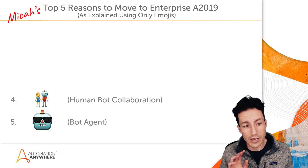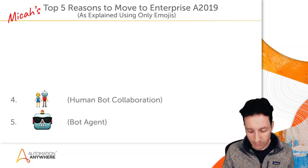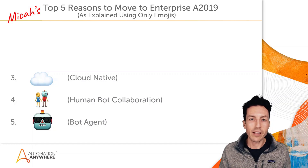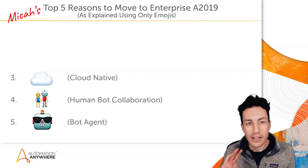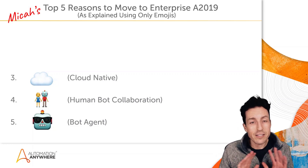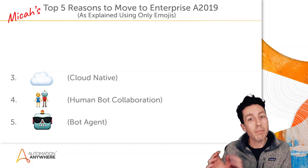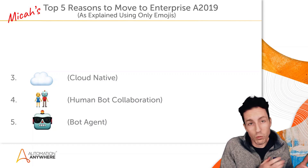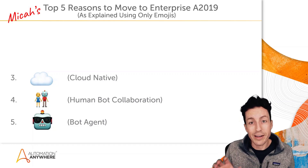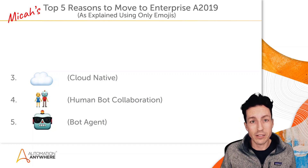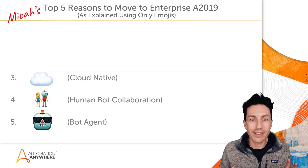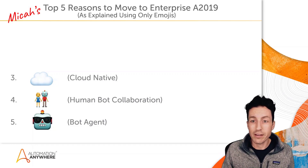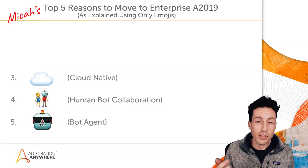Number three is cloud native. Before anyone gets upset — I think cloud is insanely awesome, and being cloud native is different than being cloud compatible. Cloud compatible means you can install it on cloud and it works. Cloud native means it was built natively to run on cloud environments, which is really impressive. Anyone who's dealt with the architecture of highly available and redundant applications knows this can be a huge pain.